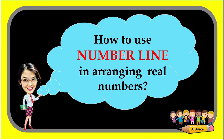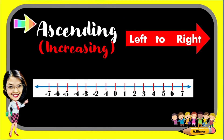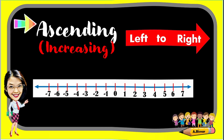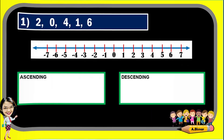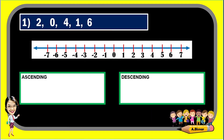Now let us learn how to use a number line in arranging real numbers. If it is ascending or increasing, the pattern will be from left to right. If it is descending or decreasing, the pattern will be from right to left.